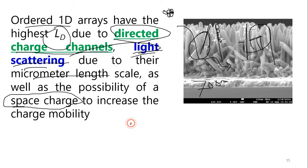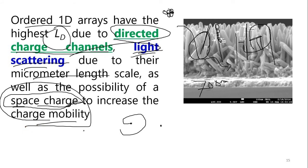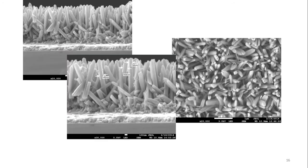The third benefit is the possibility of space charge, as opposed to point charge in small particles. Because the nanorod is lengthy, we have a space charge that increases charge mobility — the ability of electrons or holes to move faster. Due to this rod geometry, we can increase charge mobility because of the space charge.